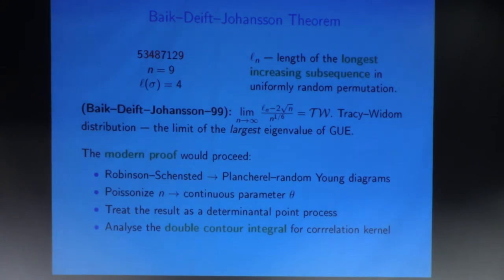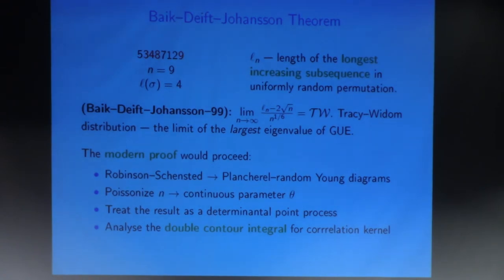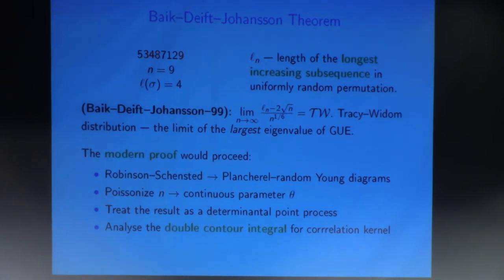First, you use a combinatorial algorithm called the Robinson-Schensted bijection, which maps the problem of computing longest increasing subsequences to computing the asymptotics of an ensemble of Plancherel random Young diagrams. Then you do Poissonization — replacing the discrete n by a continuous parameter theta by sampling n according to a Poisson distribution with parameter theta. Then you treat the ensemble of random Young diagrams as a determinantal point process, computing things as minors of matrices. Finally, you analyze this determinantal point process using a double contour integral representation for the kernel. That's how you prove the Baik-Deift-Johansson theorem.